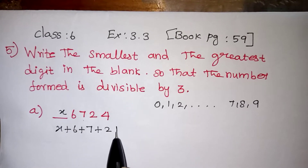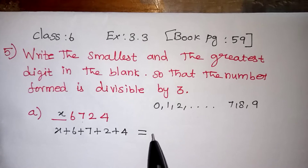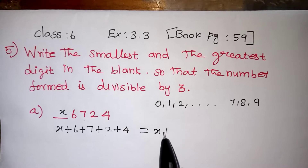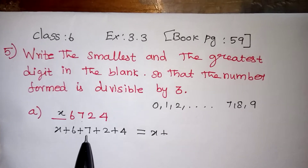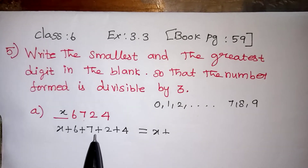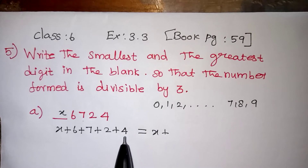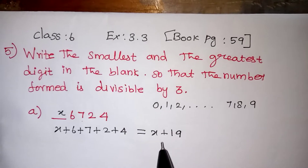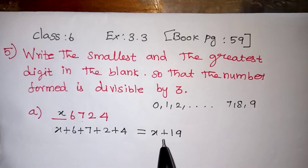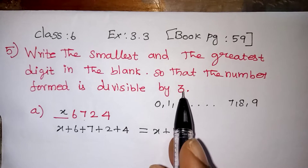So we are adding all these numbers. Here what we are getting is x plus 6 plus 7 is 13, 13 plus 2 is 15, 15 plus 4 is 19. So 19 plus some number x — that sum should come in the 3 table.